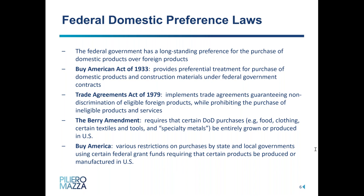The Berry Amendment only applies to Department of Defense contracts, but it requires that certain DOD purchases such as food, clothing, certain textiles and tools, and specialty metals be entirely grown or produced in the U.S. — so it's a bit more restrictive than the BAA. And then we have Buy America, which isn't a single unified statute but rather domestic content restrictions attached to funds provided to states, local governments, and third parties as federal assistance — generally covering transportation projects using DOT funding such as the Federal Highway Administration, Federal Transit Administration, and Amtrak.